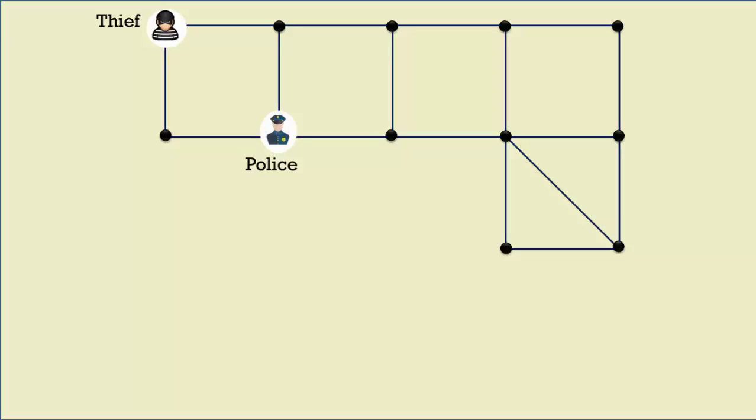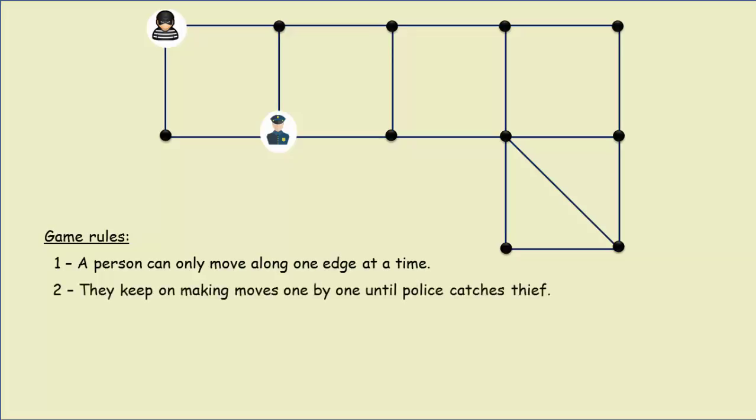The task is to catch the thief by following the game rules. A person can only move along one edge at a time. They will make moves one-by-one until the police officer catches the thief.